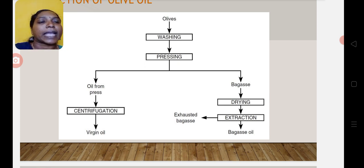From extraction, we get bagasse oil. Coming to the oil, it undergoes centrifugation, which is a separation process of oil and dust particles. From that centrifugation process, we get virgin oil.